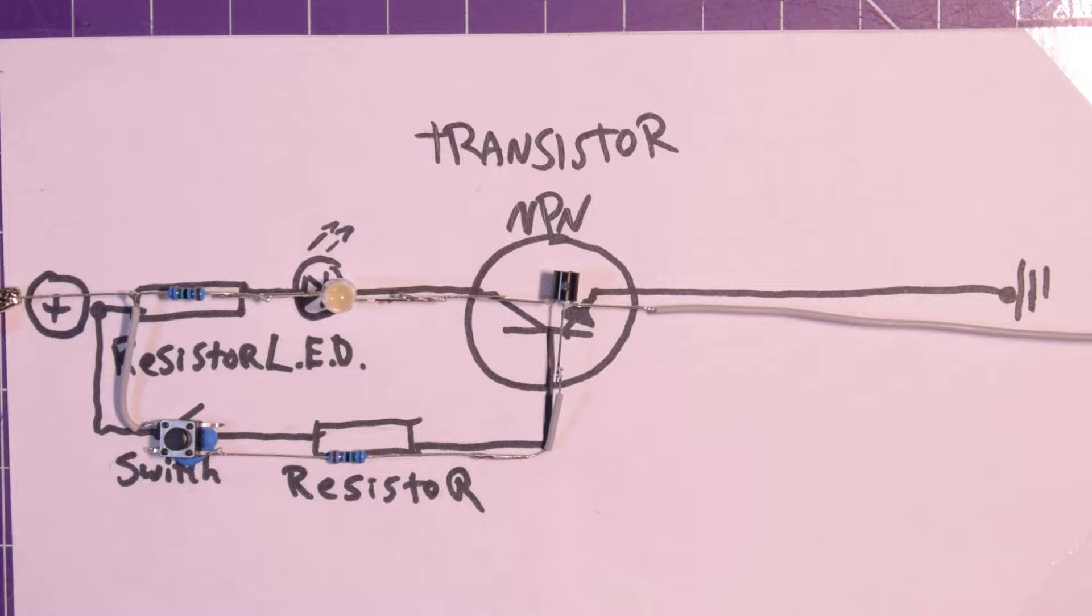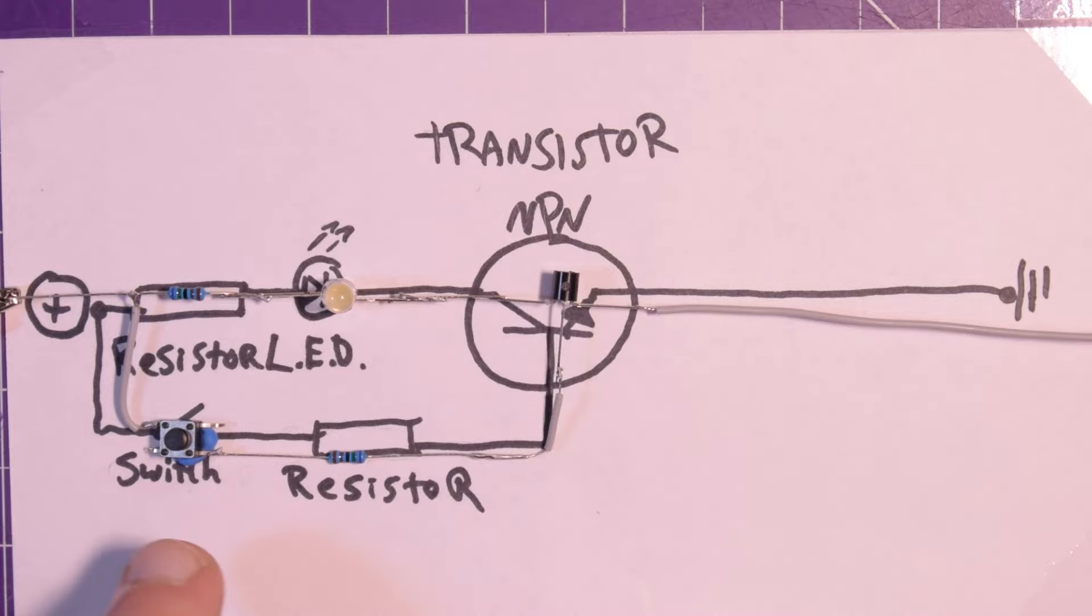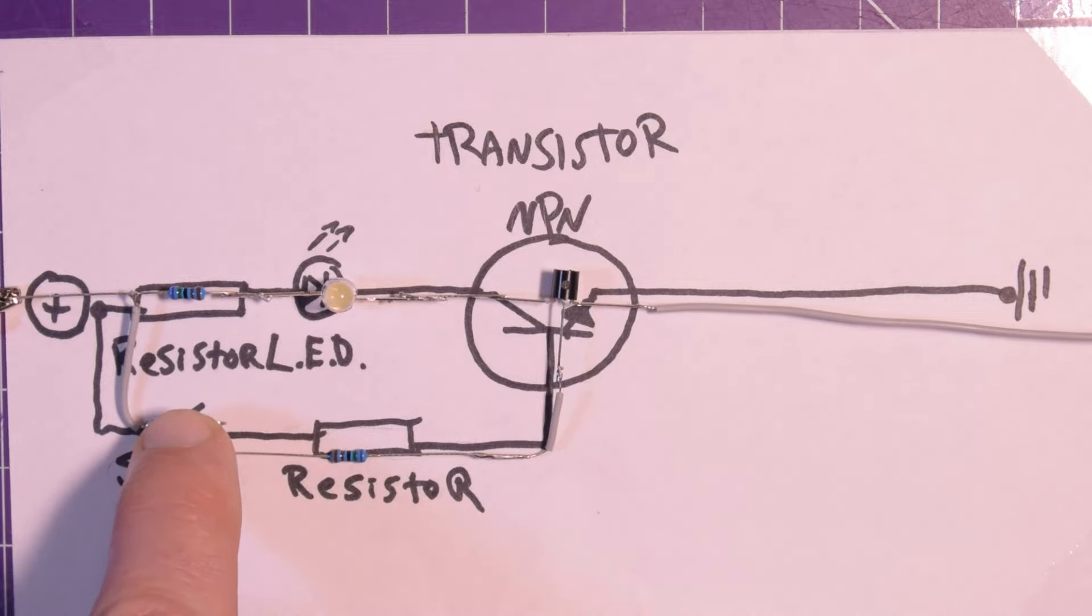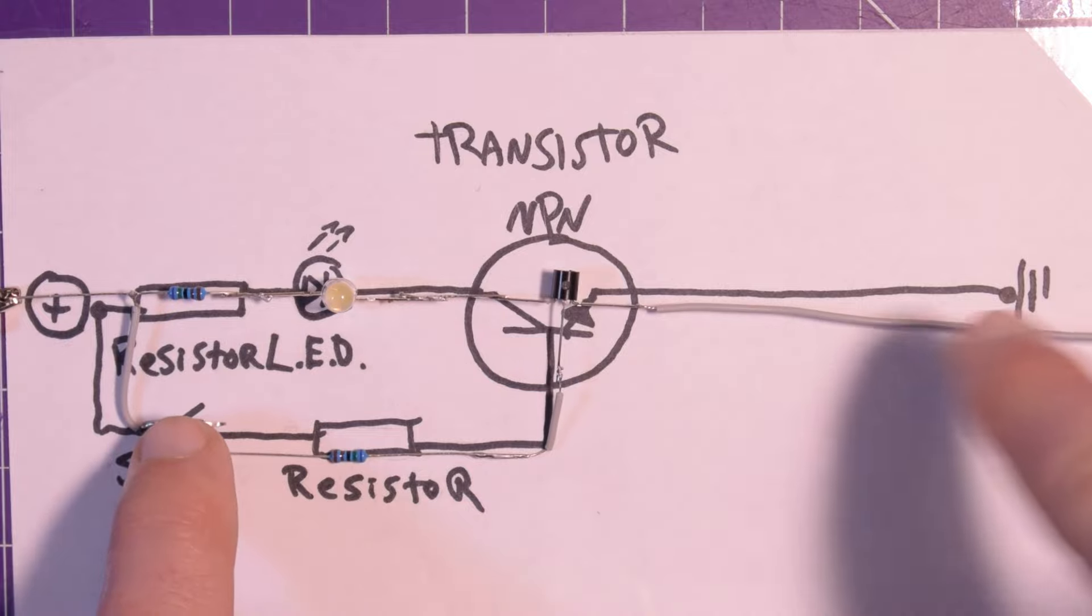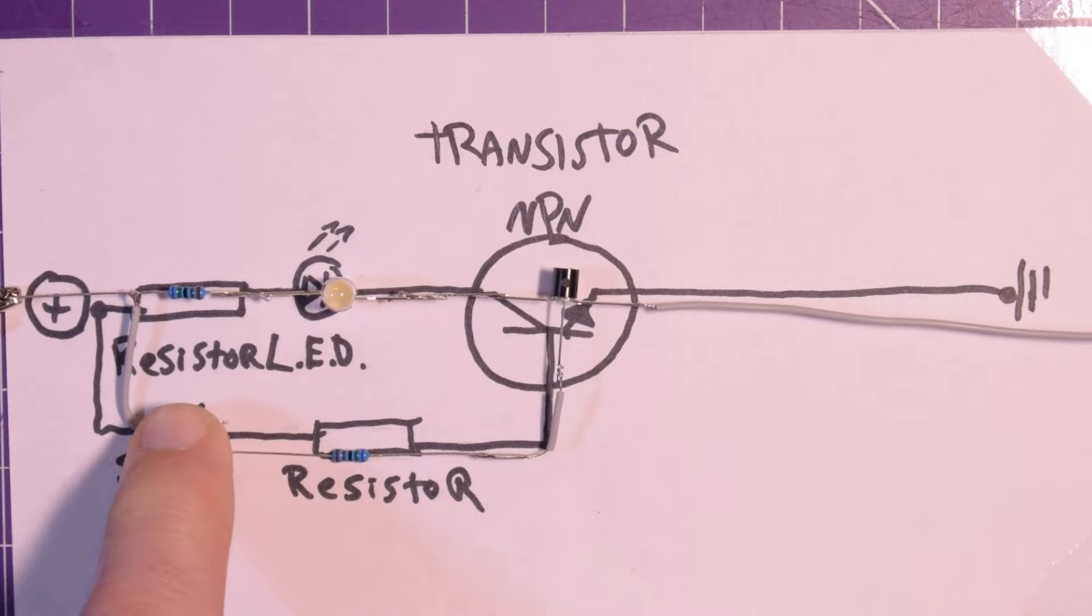So here we are and again everything's the same. We've got our 5 volts, resistor, LED, transistor, and ground. And we have our switch and our resistor for the base. When I click this we're allowing current to flow through the base of the transistor, which will allow current to flow through the switch side of the transistor. So I click the switch and there we go, the LED lights. It's just that simple.